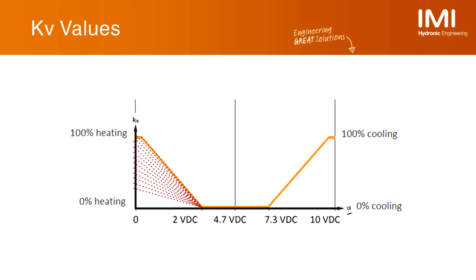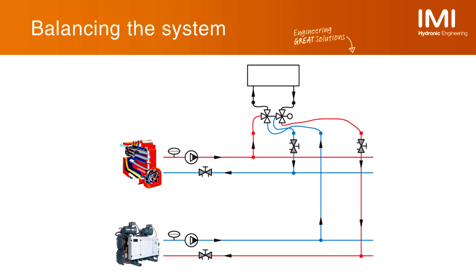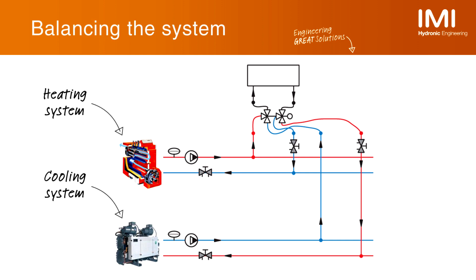Another issue is that different KV values are needed for the heating and the cooling port of the six-way valve, requiring as many as 25 different versions for each dimension of the six-way valve. Additionally, in order to provide the right flow in heating and cooling, balancing needs to be achieved both in the hydronic heating network and the hydronic cooling network.